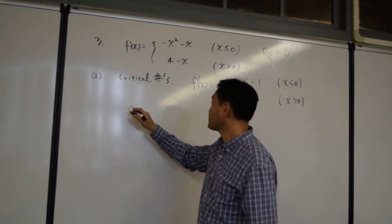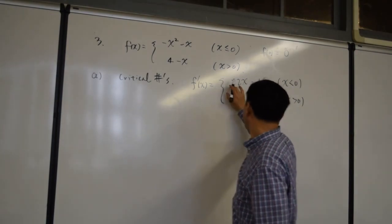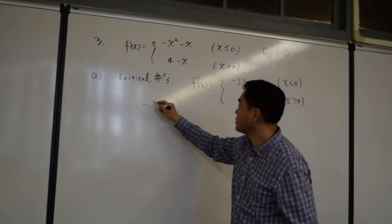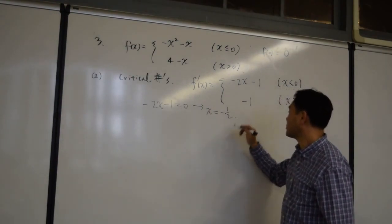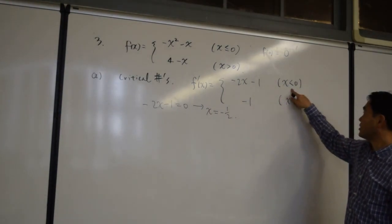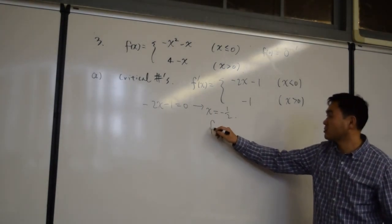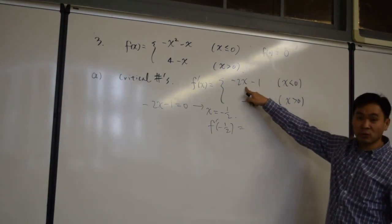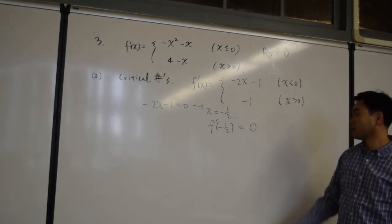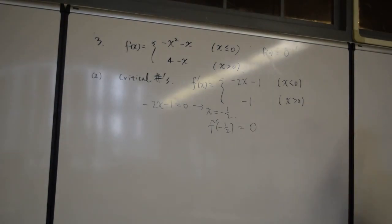So from that, we can conclude actually two things. One is this is equal to zero at x equals to negative one-half. And because negative one-half is less than zero, we do see that f prime of negative one-half should be evaluated using this, which is equal to zero. So that is one of the critical numbers.